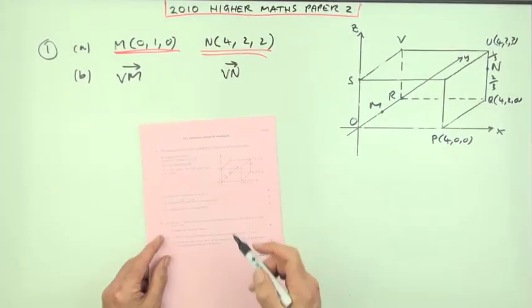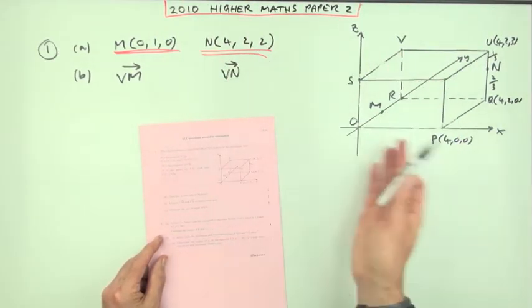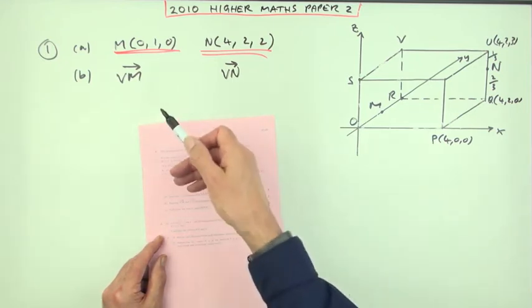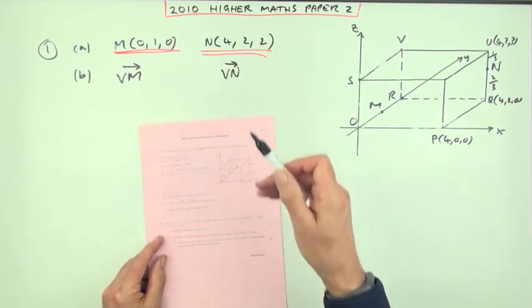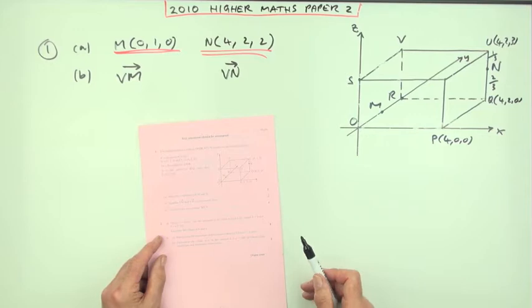Now part B. Express VM and VN in component form, and that's all it says for two marks. It'll just be one mark for each of the two results, no matter how you derive it. So you could just do it by inspection.